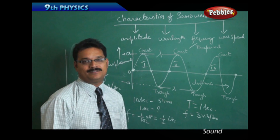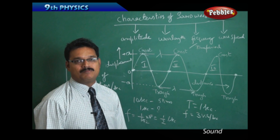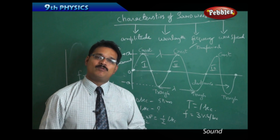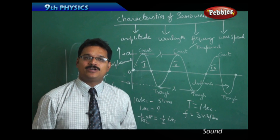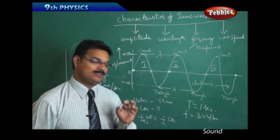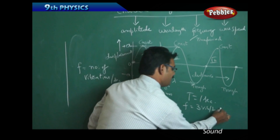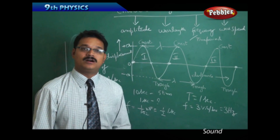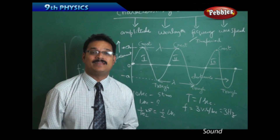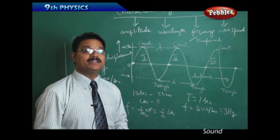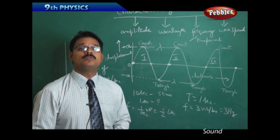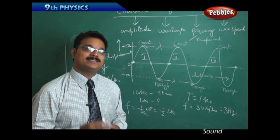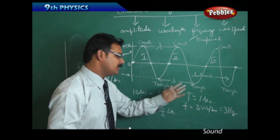Therefore the frequency equals three vibrations per second, or three waves per second. Instead of writing 'vibrations per second' we use the unit Hertz (Hz). So we write three Hz. Hertz is a scientist's name — a very famous scientist who investigated electromagnetic waves — and we take his name as the unit for frequency.